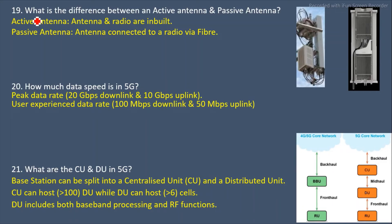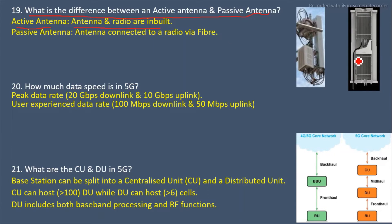Question 19: What is the difference between active antenna and passive antenna? Both are used in 5G. An active antenna is one where the radio module (RRU or RRH) is already built inside the antenna. A passive antenna is one where the radio module is connected to the antenna via fiber cable or feeder cable.